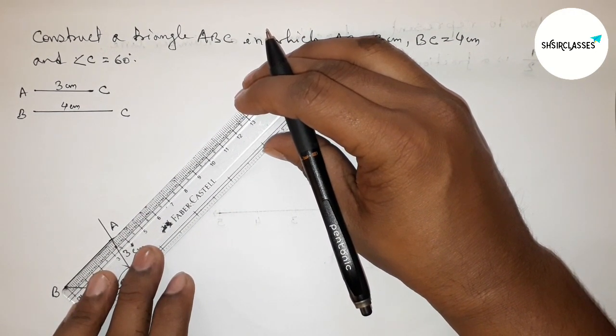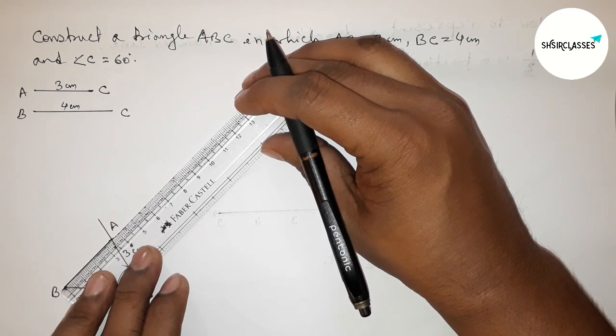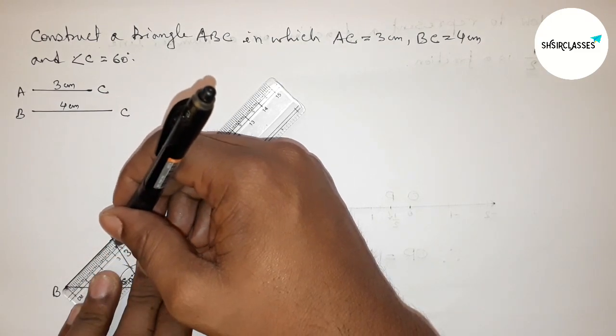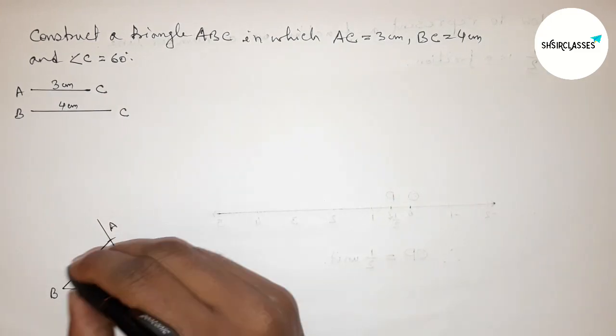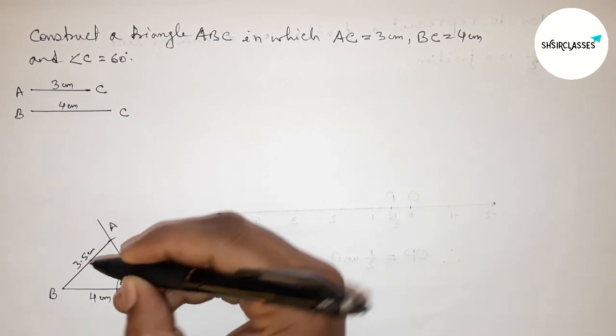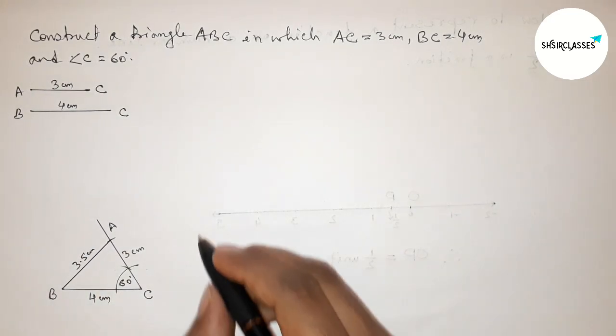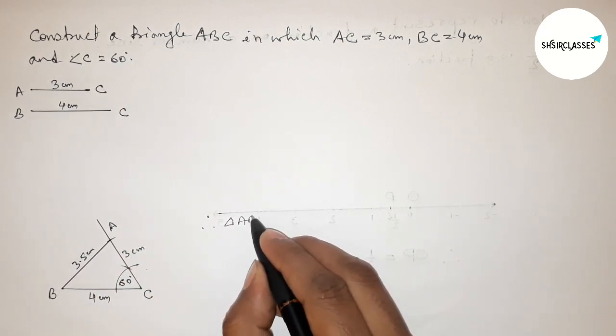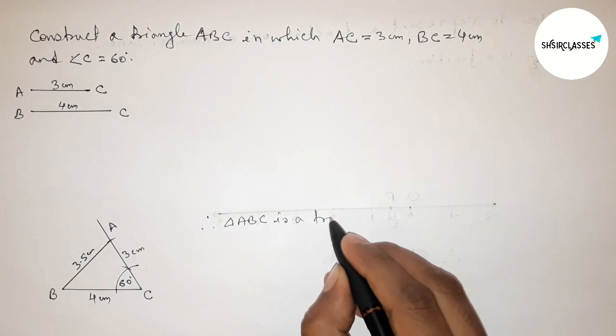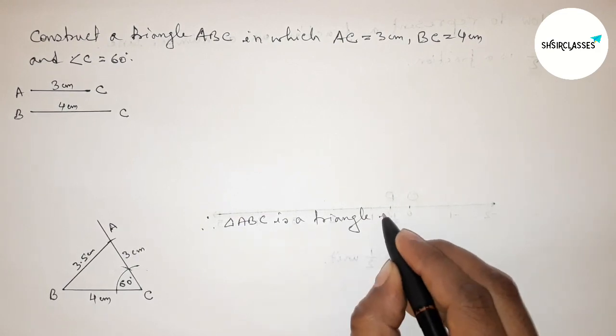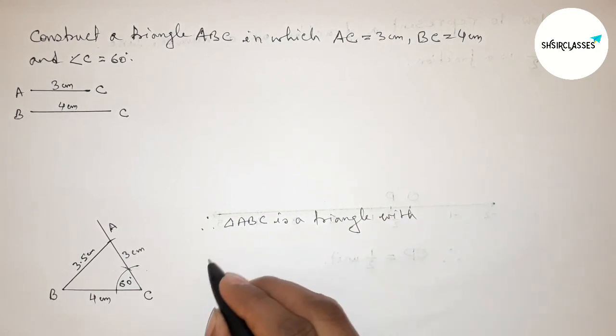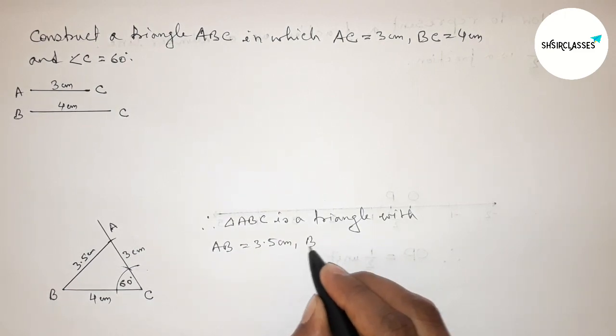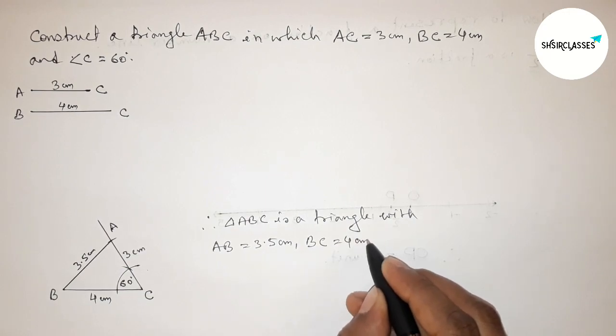With the help of a scale, this is approximately 1, 2, 3, so approximately 3.5 centimeters. Therefore, triangle ABC is a triangle with side AB equals 3.5 centimeters, BC equals 4 centimeters, and AC equals 3 centimeters.